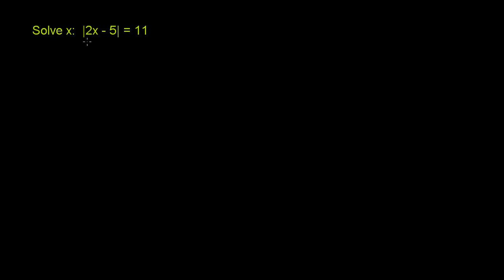Solve for x. We have the absolute value of 2x minus 5 is equal to 11.